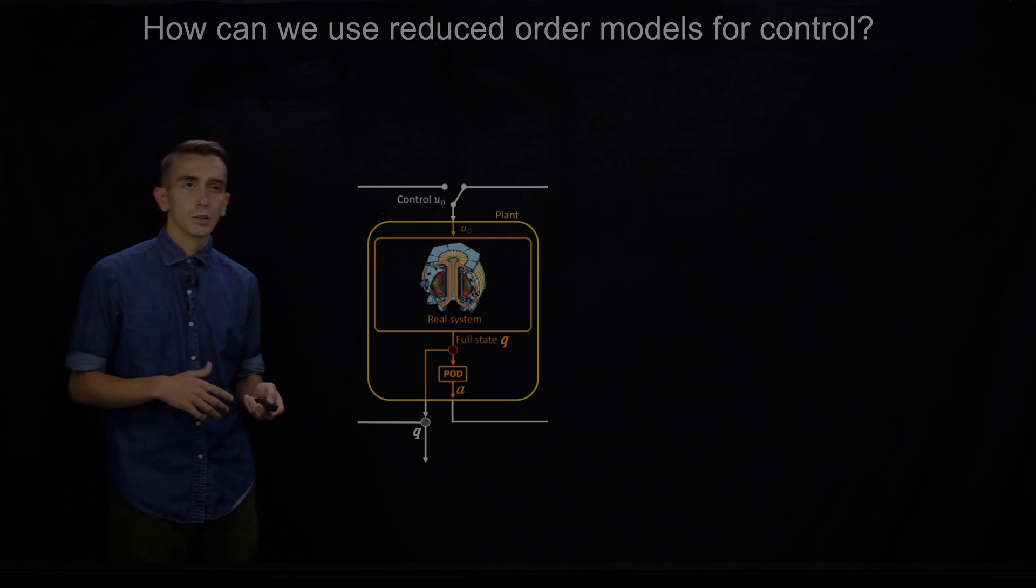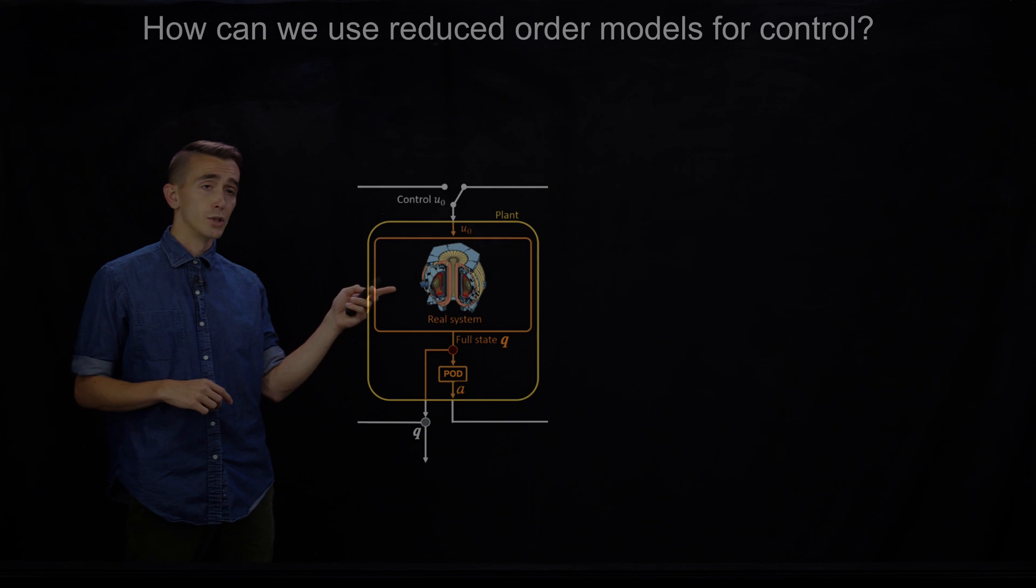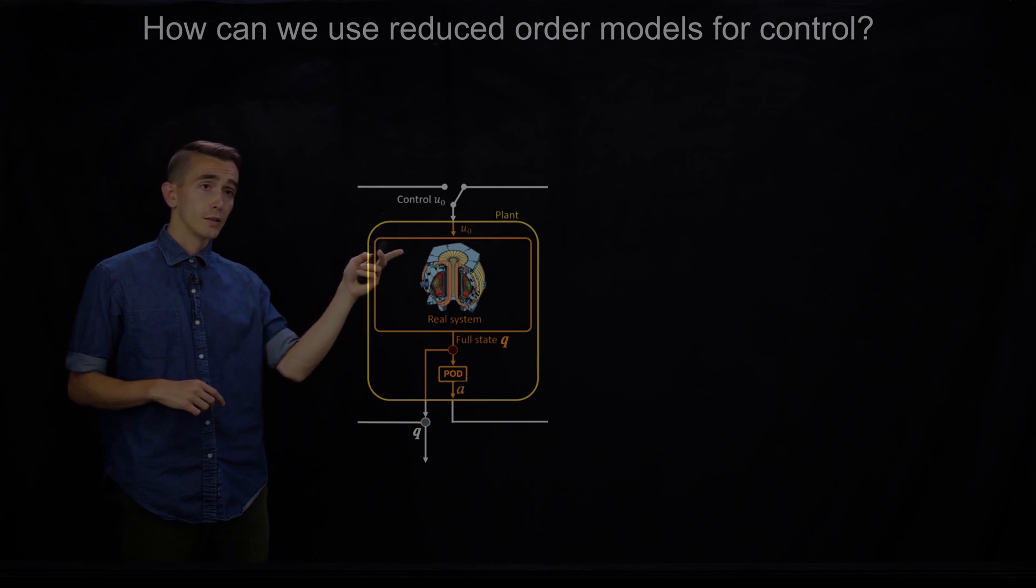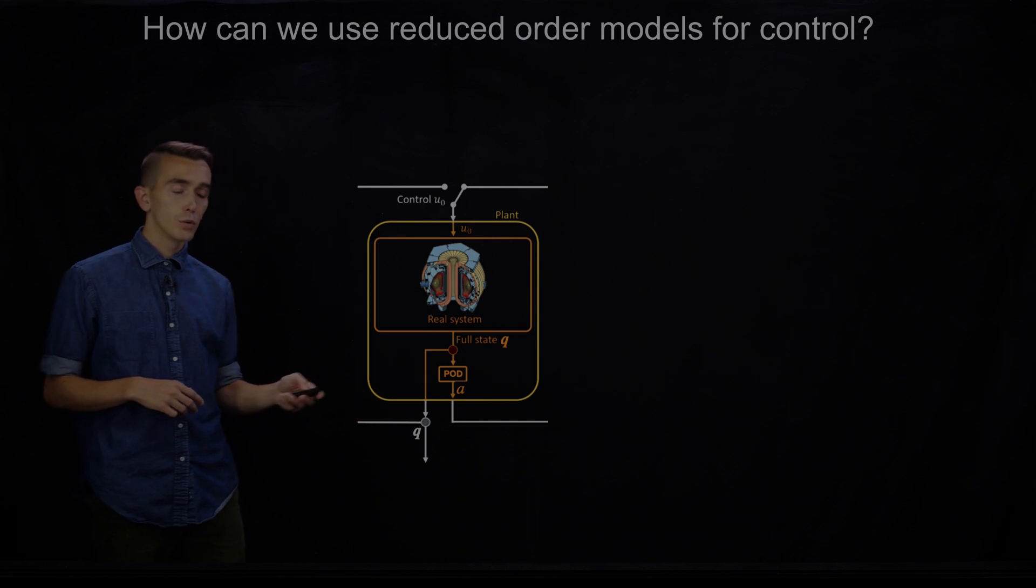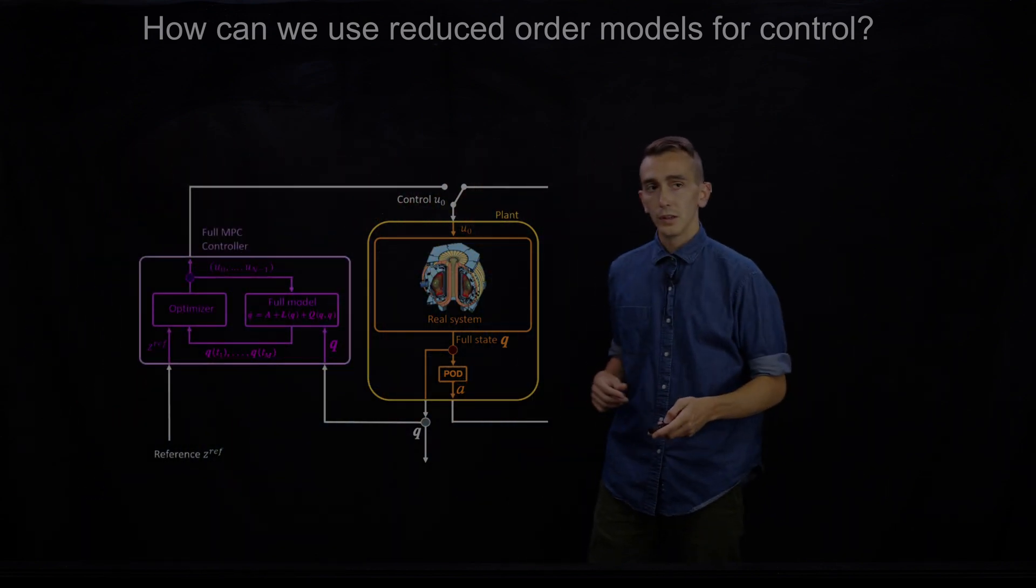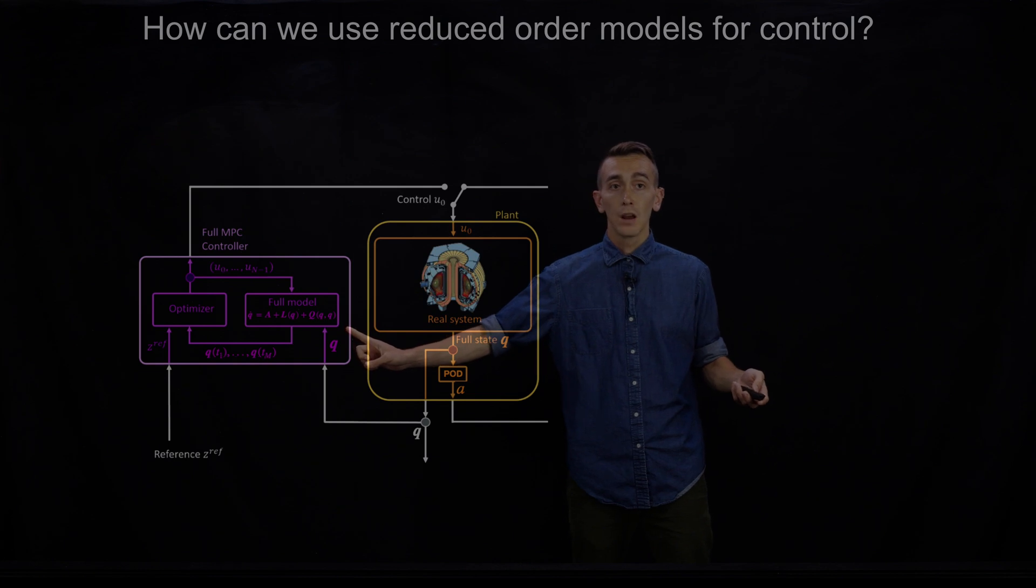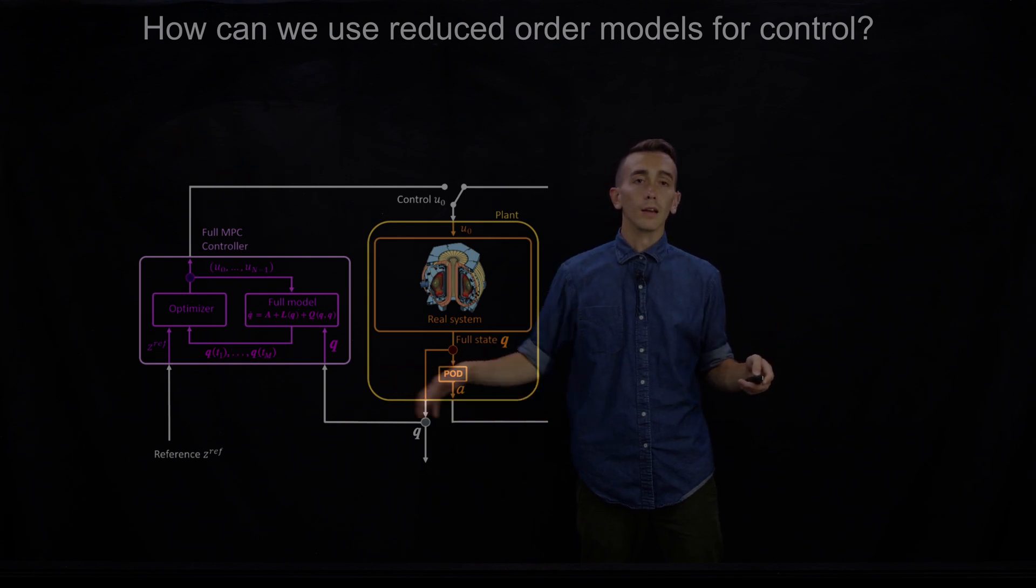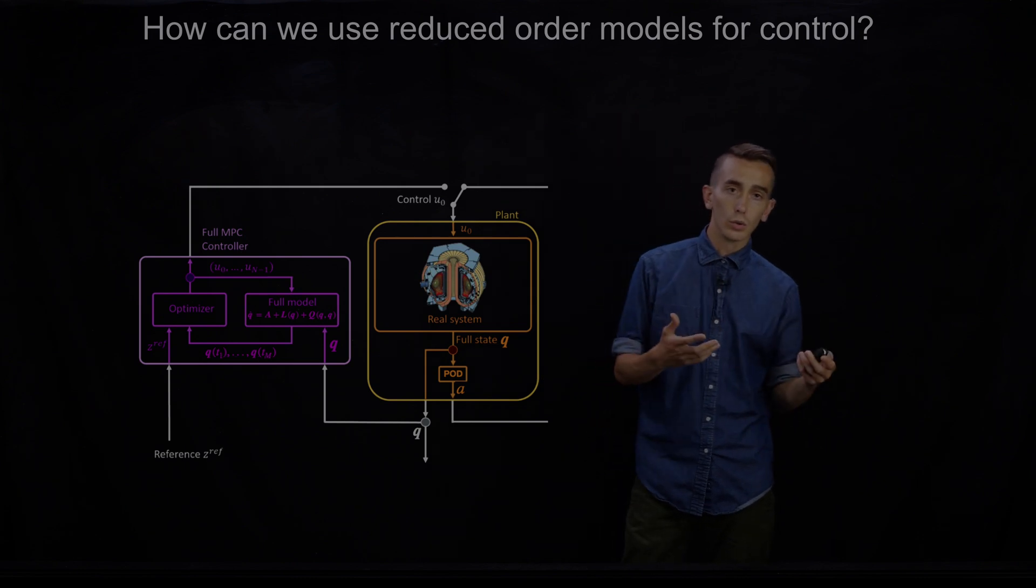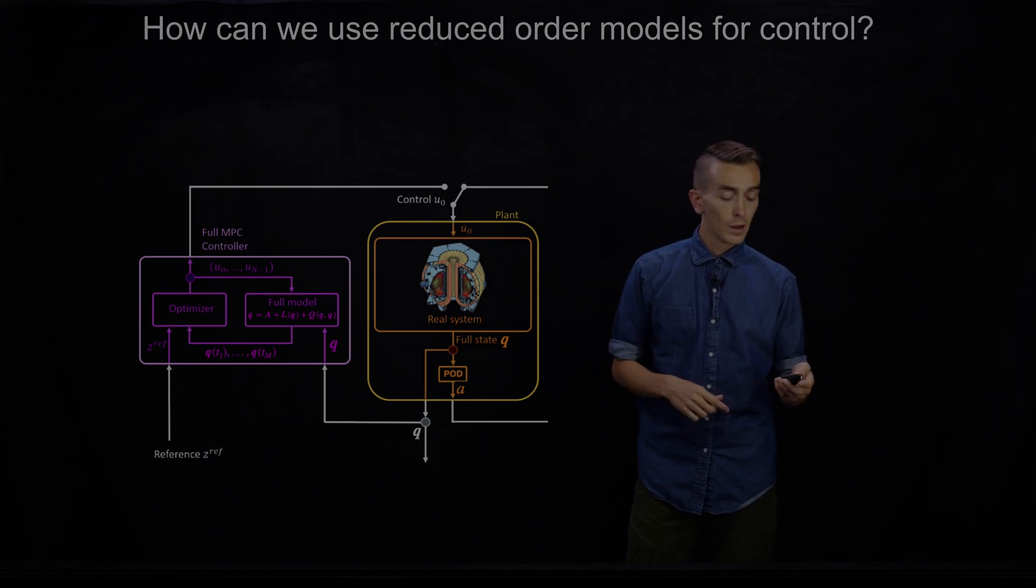So to motivate this a bit, I'm just going to talk real quick about how reduced order models can be used for control. So you have some plasma device here. I've taken an image of D3D. You have some control that's going in and actuating the plasma somehow. You imagine you have an ideal scenario, the full state measurements Q. And what you would love to do is feed this back in a closed loop where you take your full state measurements Q. You evolve them according to the full model of how the state is evolving in time. And you have some reference Z for how you want Q to look like. And this closed loop MPC controller can drive Q to Z as you close it back in this loop and change your control to actuate the plasma. So that's what you would love to do.